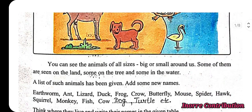You can see animals of all sizes, big or small, around us. Some of them are seen on the land, some on the tree, and some in the water. A list of such animals has been given. Add some new names.